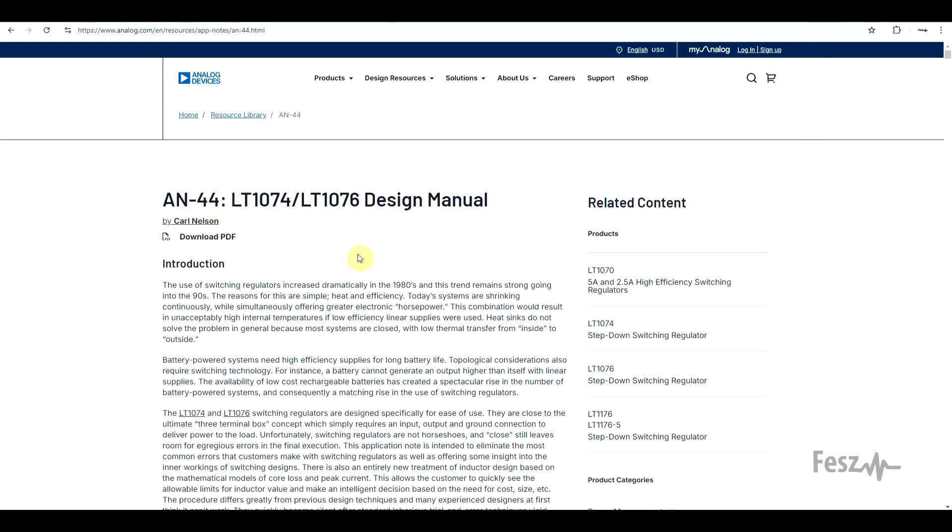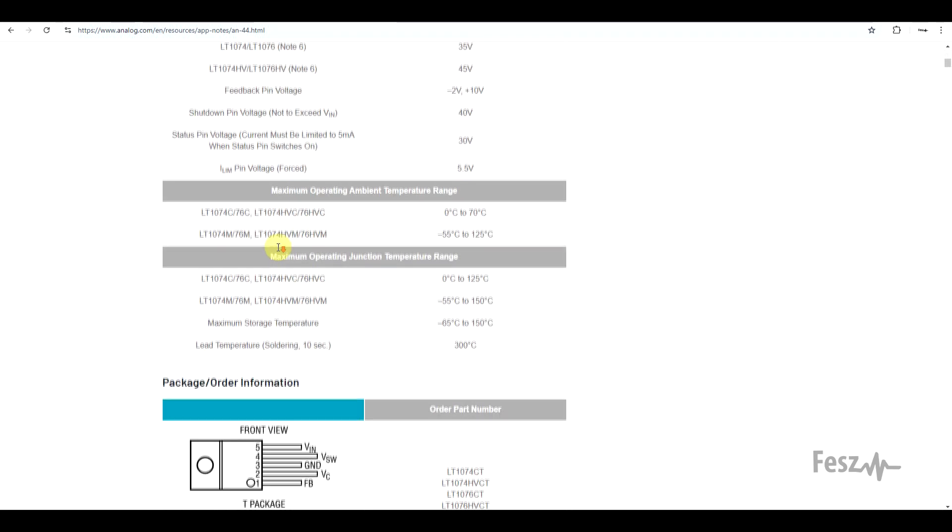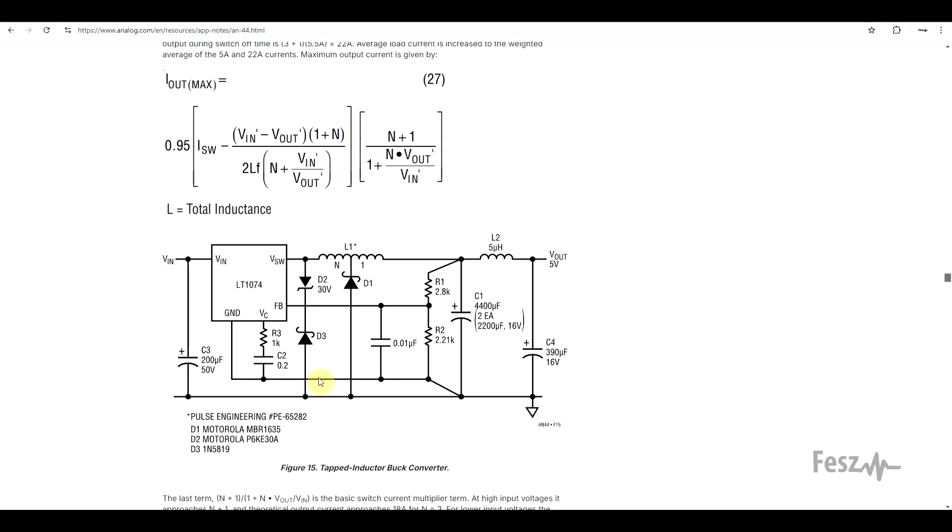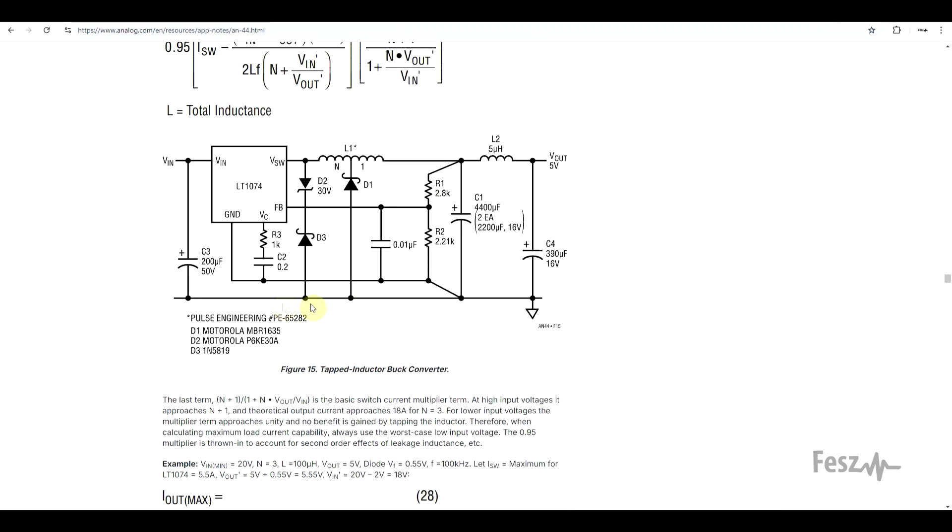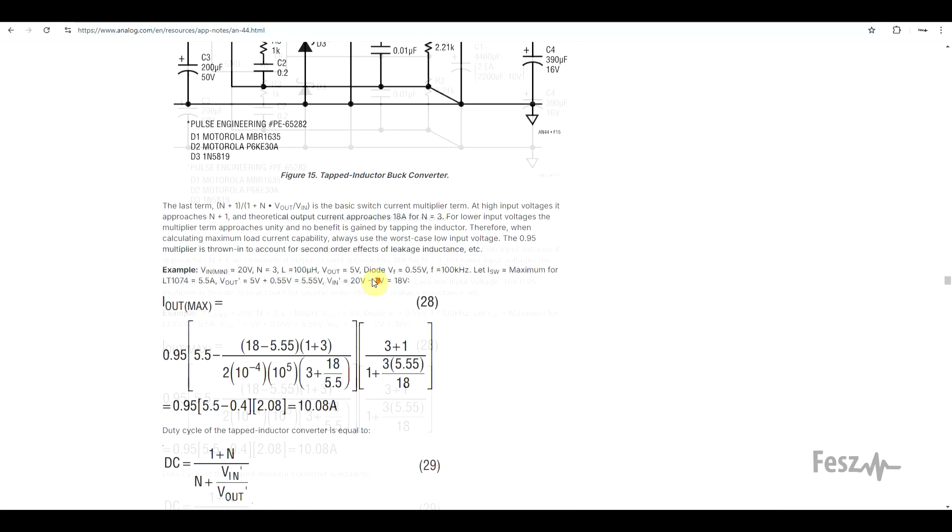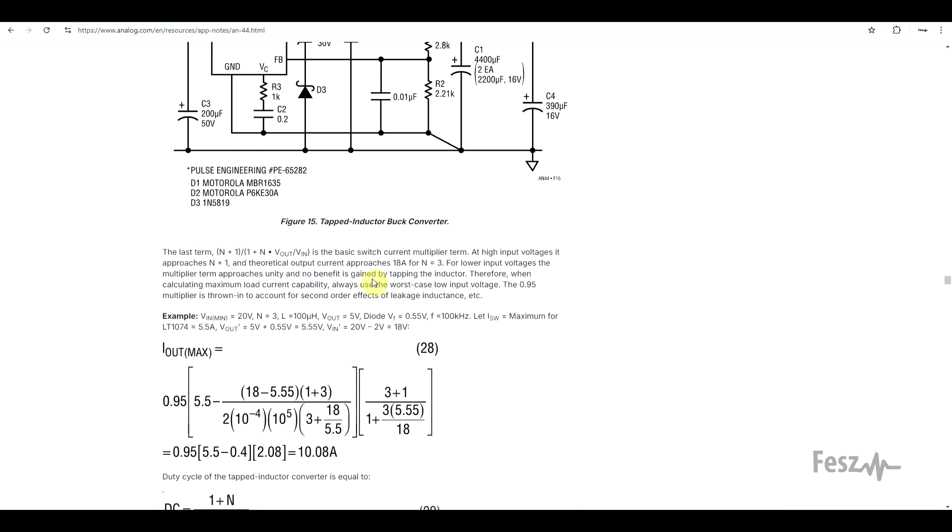However, out of all of the topology variations, which is the best? Well I could not find a lot of practical implementations that take advantage of it, but I did find a couple of very interesting application notes. One of these is Linear Technologies, currently Analog Devices, app note 44. So among other useful information, this gives a diode tapped buck implementation where the main switch is protected by a diode-zener combination. And well, other than the schematic, you also get all of the mathematics accompanying this design.